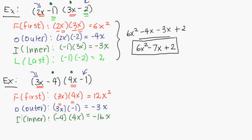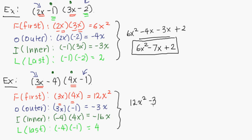And then finally we have L, which is last: negative 4 times negative 1, which is equal to positive 4 because the negatives cancel out. Adding up all the terms together, we have 12x squared minus 3x minus 16x plus 4. We combine these two middle terms to get negative 19x plus 4. So the final expanded form is 12x squared minus 19x plus 4.